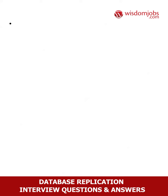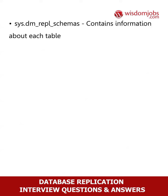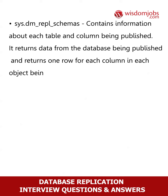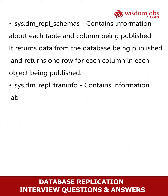sys.dm_repl_schemas: Contains information about each table and column being published. It returns data from the database being published and returns one row for each column in each object being published. sys.dm_repl_traninfo: Contains information about each transaction in a transactional replication.